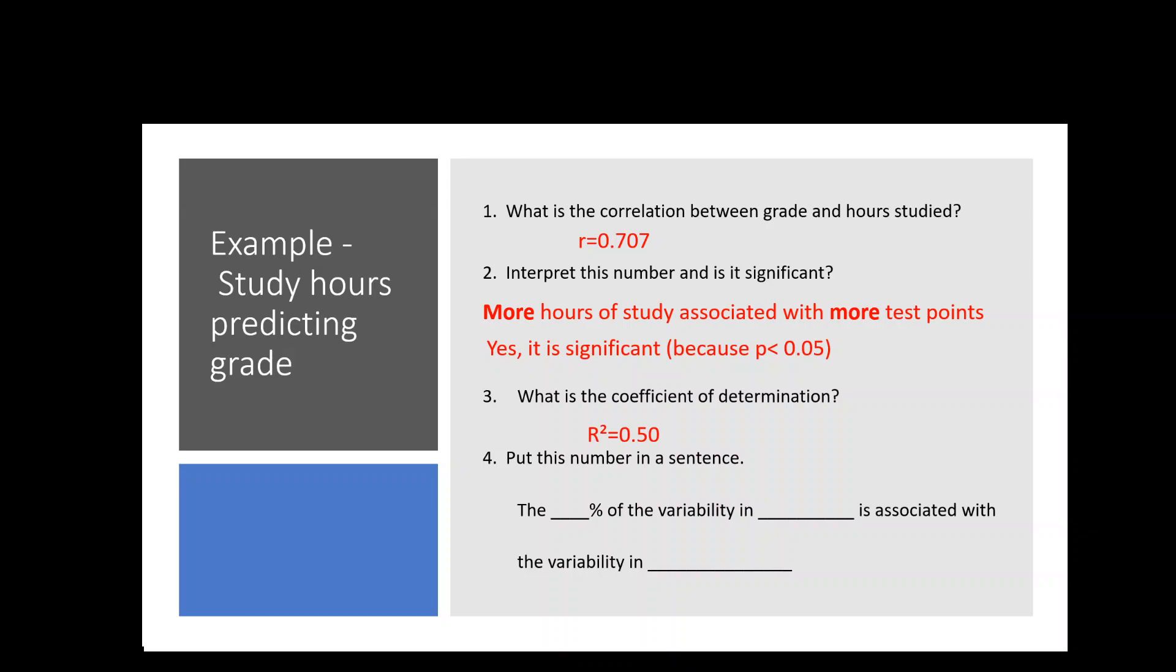So now I want to plug that into this sentence. Remember, the key piece is remembering what to put where. We are always desiring to explain the outcome variable. That's our goal. So that's why we're going to put it first in the sentence. So our sentence is going to be, 50% of the variability in test score is associated with the variability in hours studied. So it's our y variable here and our x variable at the end. Most common mistake I see in exams is switching these two. So remember, we're trying to explain outcome variables. So that's why we're saying the 50% of the variability in our outcome variable. So those are our correlation questions. Let's move on to our regression questions.